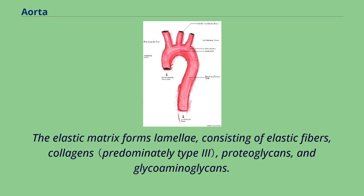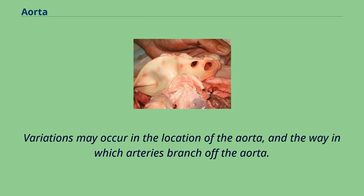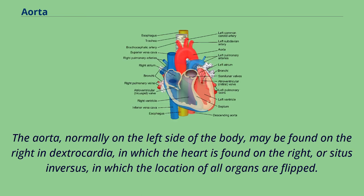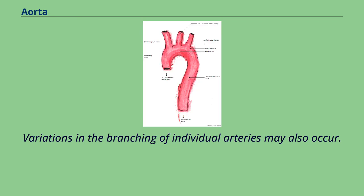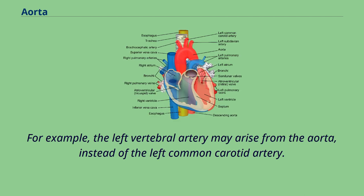Variations may occur in the location of the aorta and the way in which arteries branch off the aorta. The aorta, normally on the left side of the body, may be found on the right in dextrocardia, in which the heart is found on the right, or situs inversus, in which the location of all organs are flipped. Variations in the branching of individual arteries may also occur; for example, the left vertebral artery may arise from the aorta instead of the left common carotid artery.